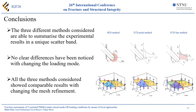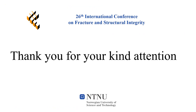In conclusion, the three different methods considered in the present work can summarize the experimental results in a unique scatterband. No clear difference has been noticed with changing the loading mode or the notch radius. All three different methods showed comparable results with changing the mesh refinement, even if a greater approximation of the stress field has been noticed with decreasing the notch radius, as expected. It is reasonable to assume that when the radius of the notch is negligible and the sharp notch is modelled in the finite element model, greater errors are to be expected from the TCD method using coarse discretizations. Thank you for your kind attention.